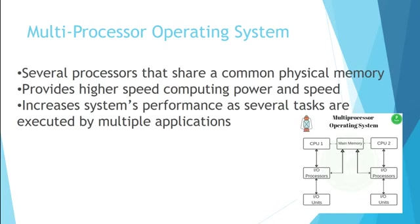Multi-processor — what is a processor? A processor is a CPU, the brain of the computer. If I have more than one microprocessor or CPU and they are using the same memory, it becomes a multi-processor operating system. Because there are two CPUs, the speed would be very high and the computer would be very powerful. It increases the performance of all tasks done by the computer, because it can execute multiple processes with more than one processor.